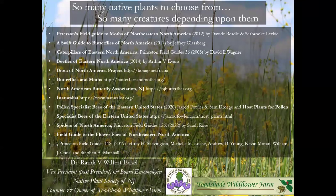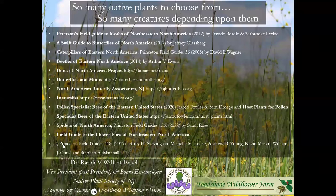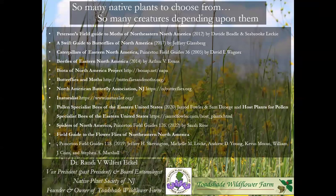This slide keeps getting more and more complicated, but these are just some of the really fabulous resources I like to use to try to identify things. The Field Guide to Flower Flies in the Northeast and North America is Princeton Field Guide 118. This is a wonderful list of resources — both websites and books — that can really help you identify some of the insects in your garden and what they're doing there. I hope that while you're planting your native gardens and admiring native plants in the wild, you'll really look at some of the creatures that rely on them. Thanks again so much for sending in all your pictures for this presentation.